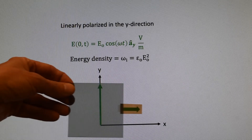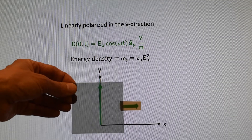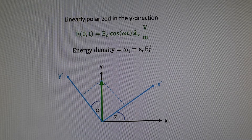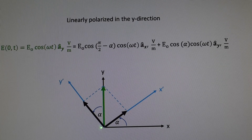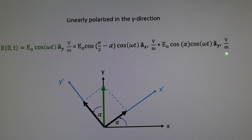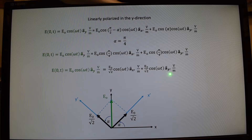We saw that if we brought in a horizontally oriented polarizing filter, it would completely block this vertically polarized electromagnetic wave. Let's introduce a second coordinate system that is rotated through an angle alpha with respect to our original coordinate system, and let's indicate it with primes. We can represent our linearly polarized in the y direction electromagnetic wave by the sum of two vector components, one in the x-prime direction and one in the y-prime direction. Let's pick a specific angle of pi over 4 radians or 45 degrees, so that it corresponds to the experiment we're trying to describe.